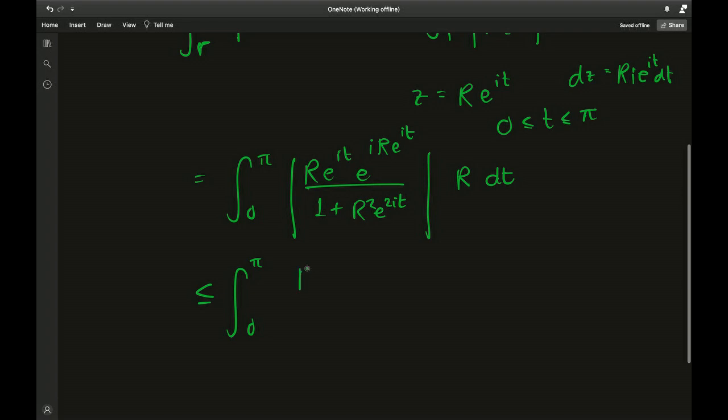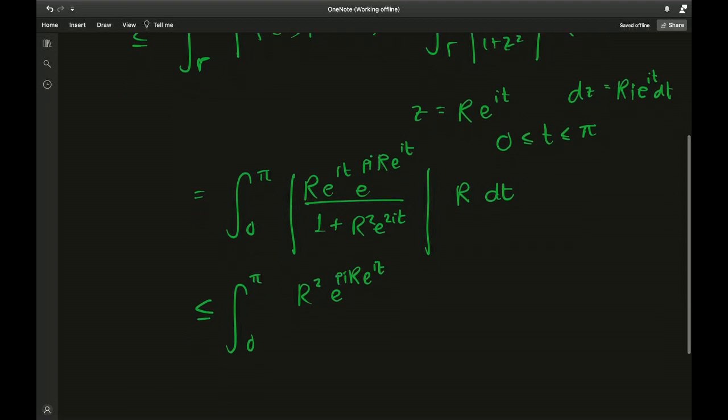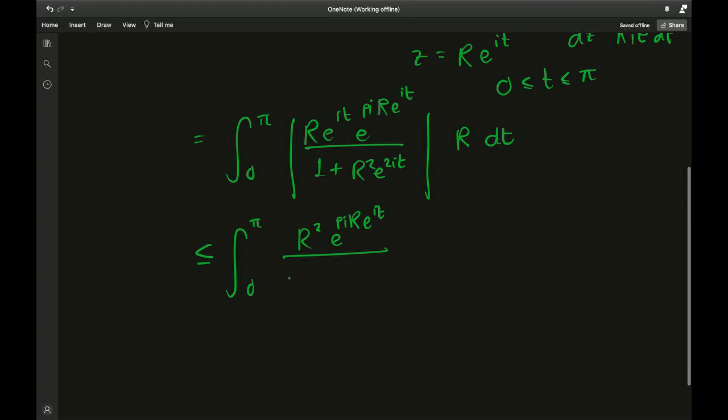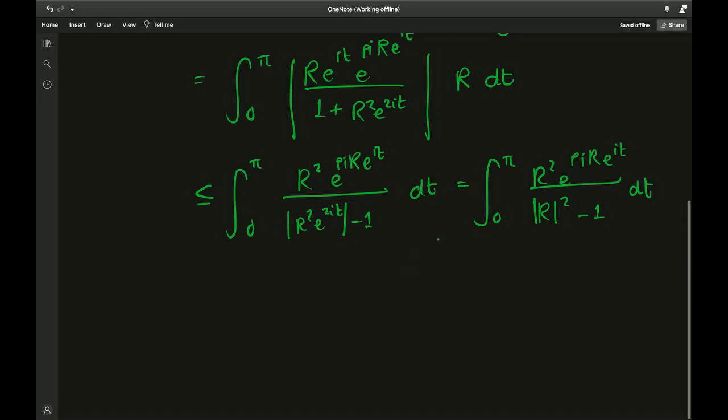Mod of e to the it will just be 1 and we can convert the denominator using the triangle inequality into something more practical. We have integral from 0 to pi of r squared times e to the pi r times e to the it divided by r squared minus 1 dt. Now the only problem here is that if you take the limit as r goes to infinity, the numerator having a positive exponential will make the entire integral go to infinity.